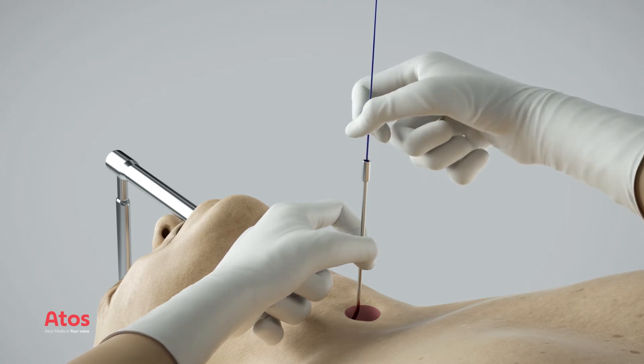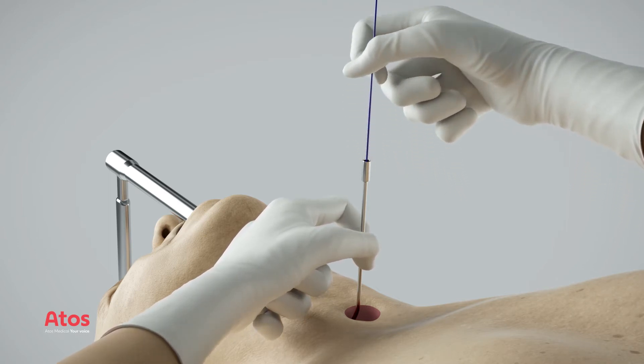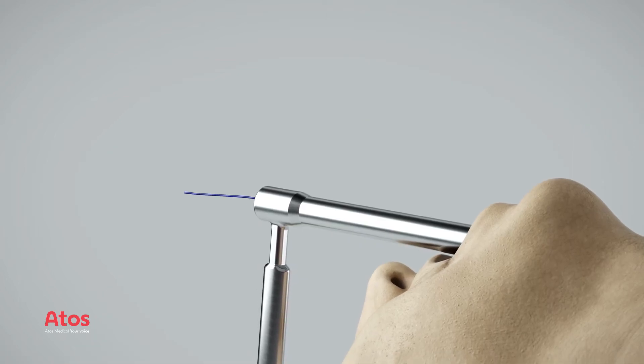Insert the guide wire into the puncture needle. Push the guide wire through the instrument until it extends approximately 20 cm out through the distal end of the instrument.